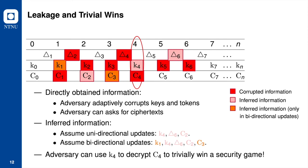Notice that the adversary can use K4 to decrypt C4 to trivially win a security game, regardless of whether the update setting of the UE scheme is unidirectional or bidirectional.